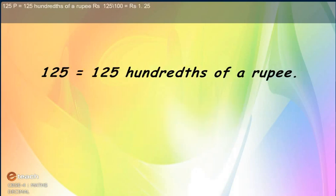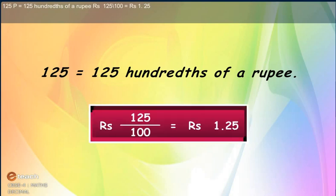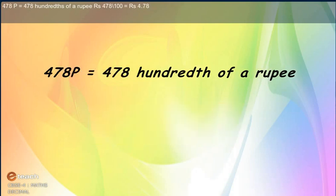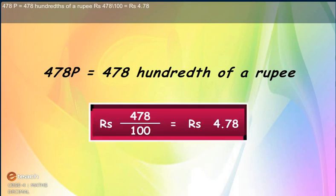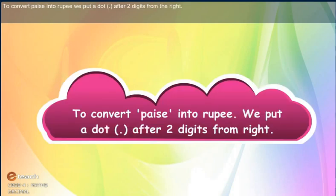125 paise equals 125 hundredths of a rupee, which means rupees 125 upon 100, or rupees 1.25. 478 paise equals 478 hundredths of a rupee, which means rupees 478 upon 100, or rupees 4.78. To convert paise into rupee, we put a dot after 2 digits from the right.